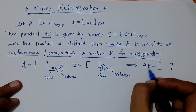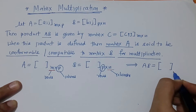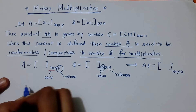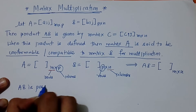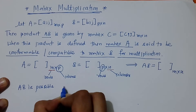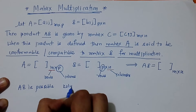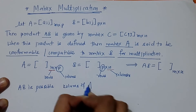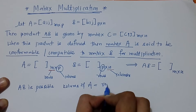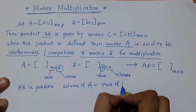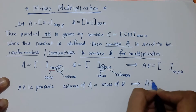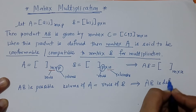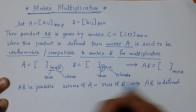So what is the order of matrix AB? The order is M by N. Product AB is possible only when columns of A is equal to rows of B — only then is the product AB defined.